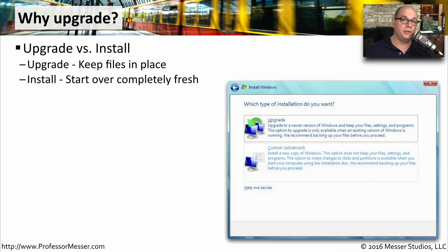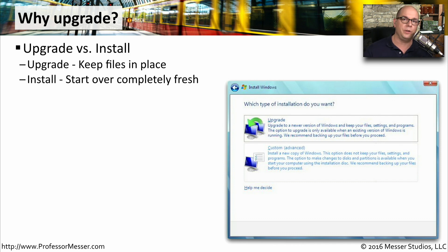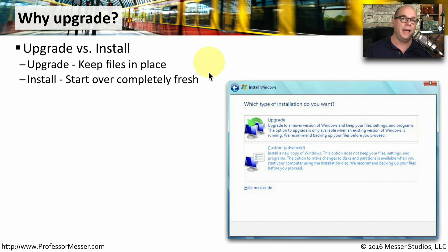You will eventually need to upgrade your current operating system version to a newer version. Maybe you've purchased a new computer, or you'd simply like to improve the capabilities of your existing machine. You can usually do this in a number of different ways. First, you have to think about whether you want to upgrade or whether you want to install. An upgrade is one where you're keeping all of your files in place, your configurations stay exactly the same, and you're simply installing a new version of an operating system over the existing version.